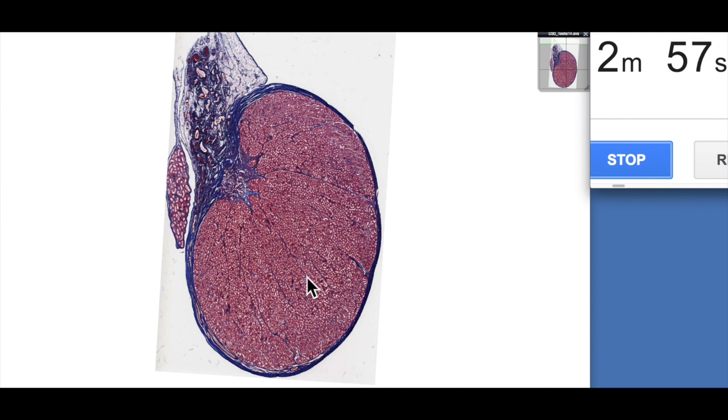Each testis you can see here is quite an oval shaped structure. On its posterior surface, this is anterior, on its posterior surface we have the spermatic cord here which attaches to the testis. It carries the ductus deferens, which we'll talk about in another video. On its posterior surface we also have the epididymis.